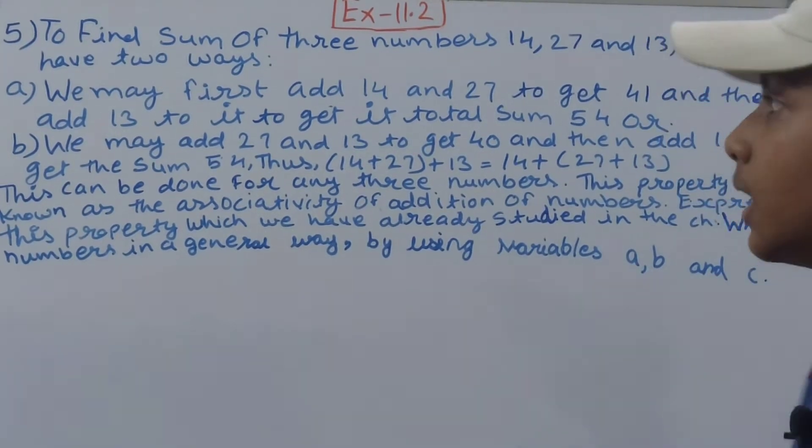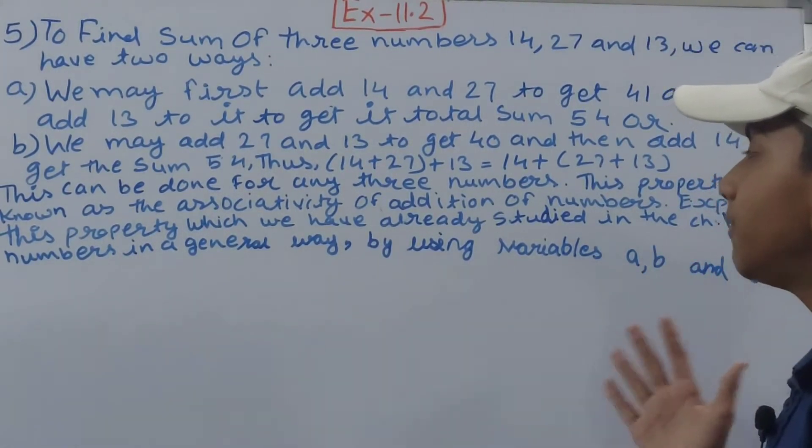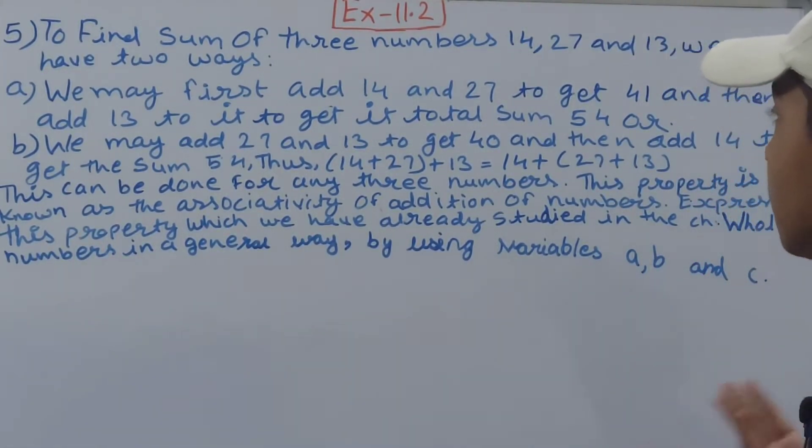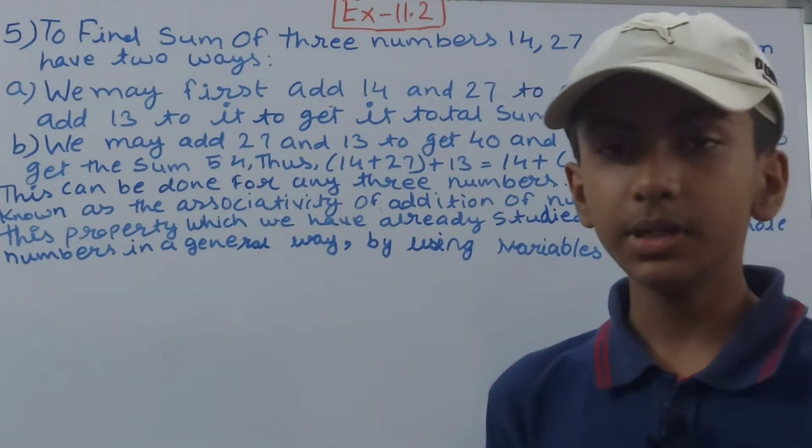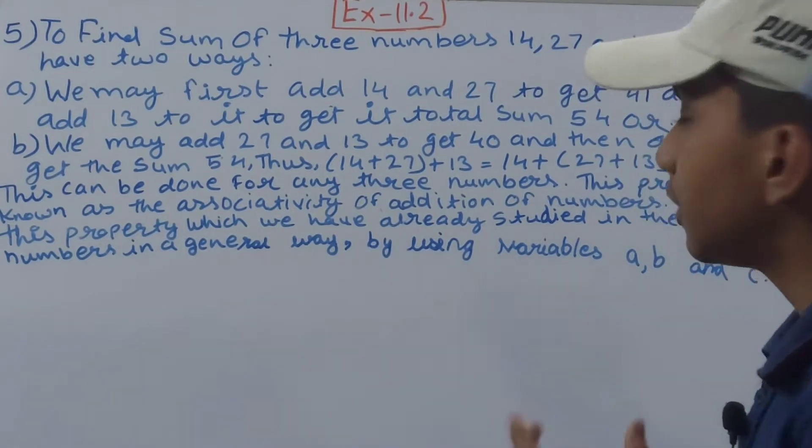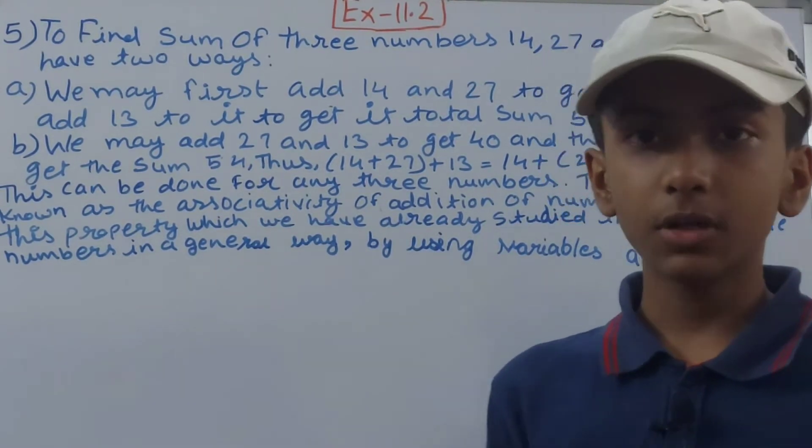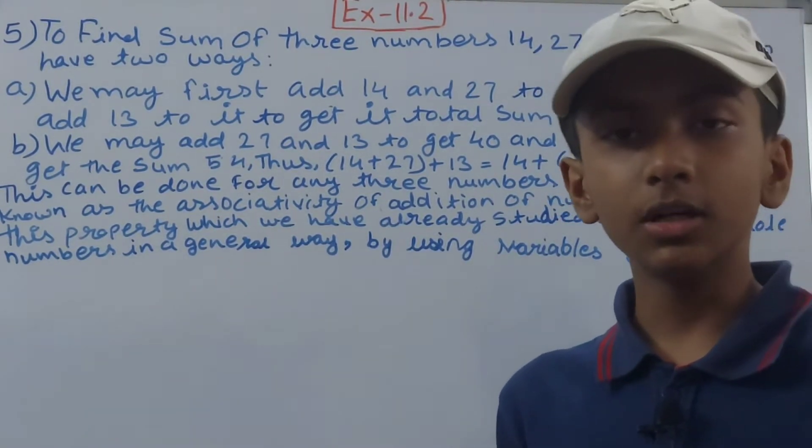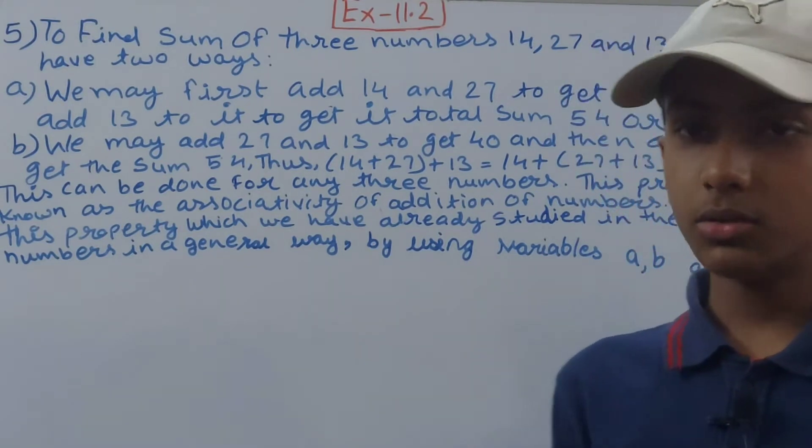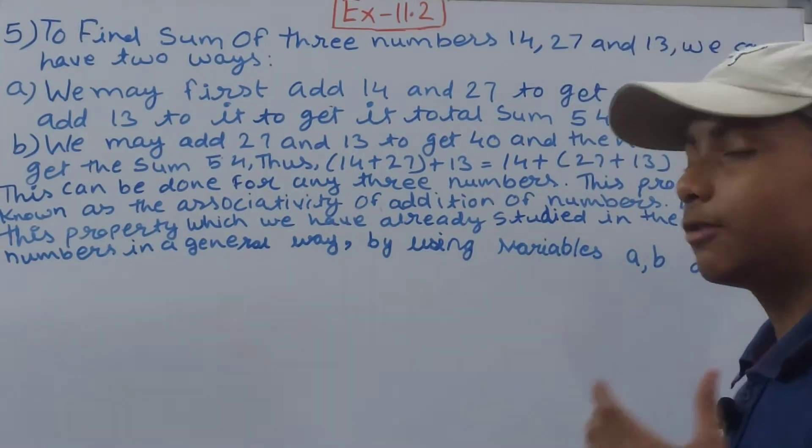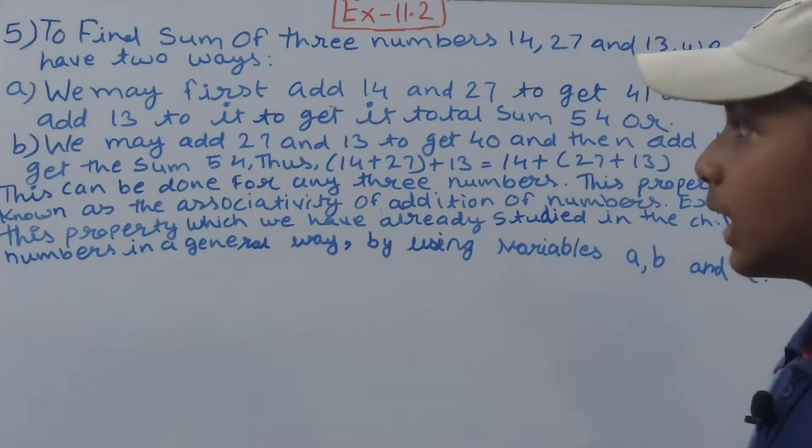What are those two ways? First one: we may first add 14 and 27 to get 41, and then add 13 to it to get a total sum of 54. So you can add 14 and 27, you will get 41. Then add the third number, that is 13, so you will get 54. That will be the sum of those three numbers.